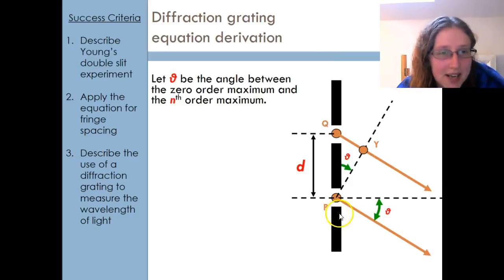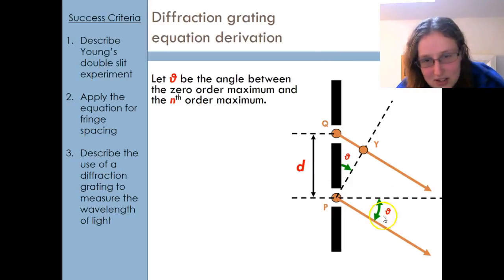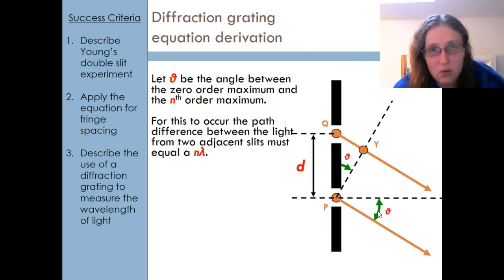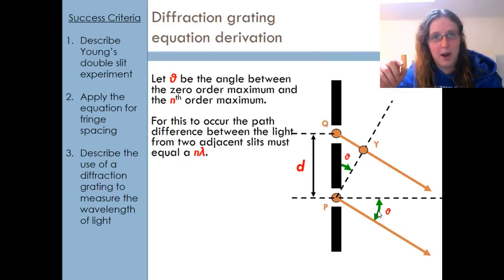Let's call theta the angle between the 0 order maximum and the nth order maximum, the angle that I'm interested in. In order for that to occur, the path difference between the light from the two adjacent slits must be equal to n times lambda. They must have traveled a different distance in order for them to be constructively interfering. If you remember, we talked about superposition—I get reinforcement when I get two peaks arriving at the same time. The difference in the distance they must have traveled must be a whole number of wavelengths, because the distance between a peak and a peak is a wavelength.